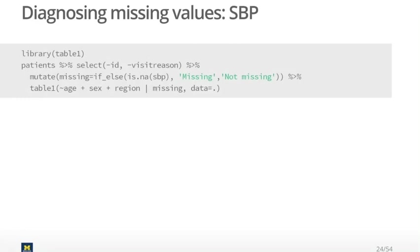Let's take a look at the patients data frame from the NAMSIS-08 file that we've been using in class and try to figure out why the values of systolic blood pressure went missing. You could certainly do this entirely using Tidyverse with dplyr and tidyr, but I wanted to show you this other package called Table1, which I find useful for generating tables with summary statistics using very little code.